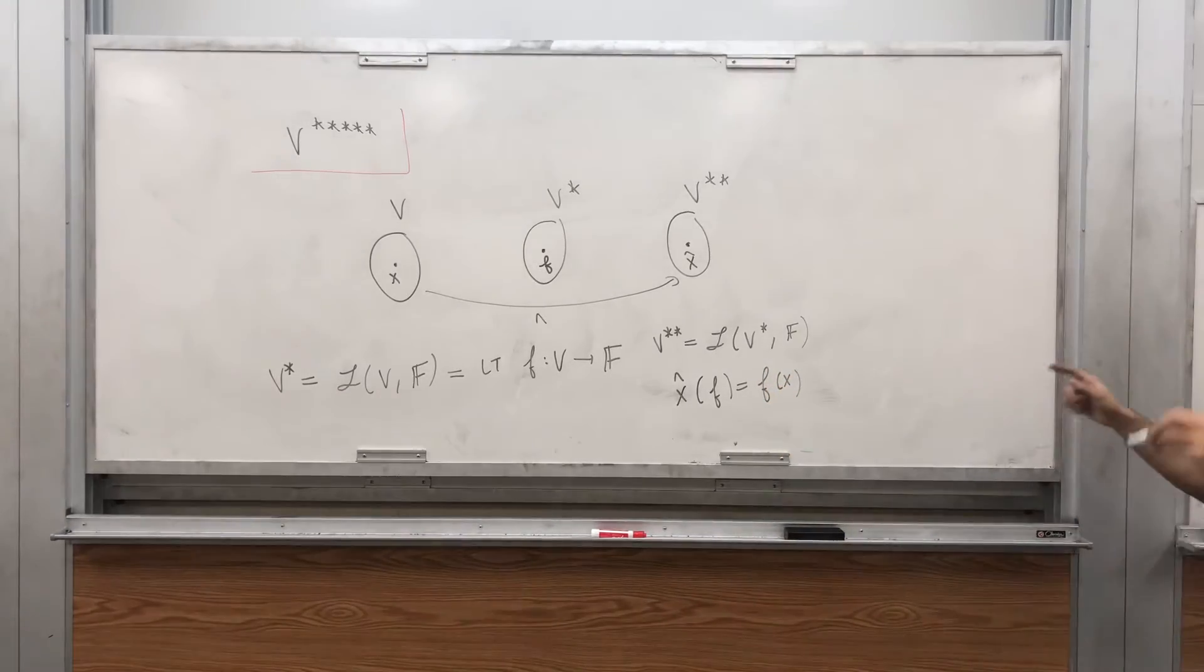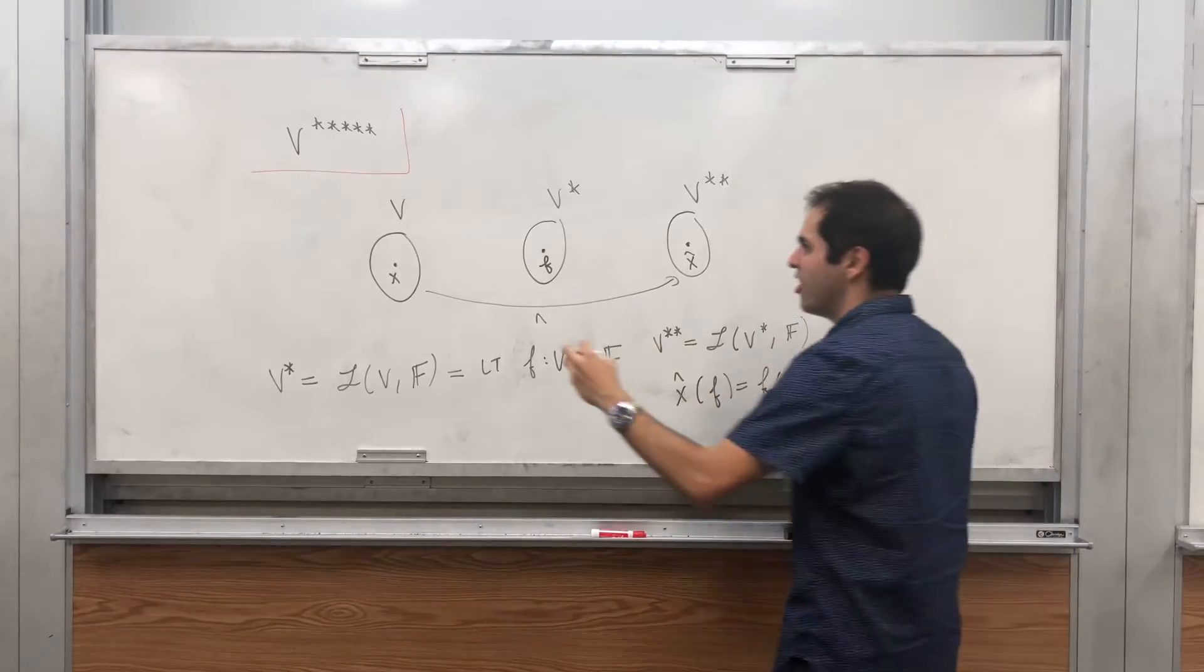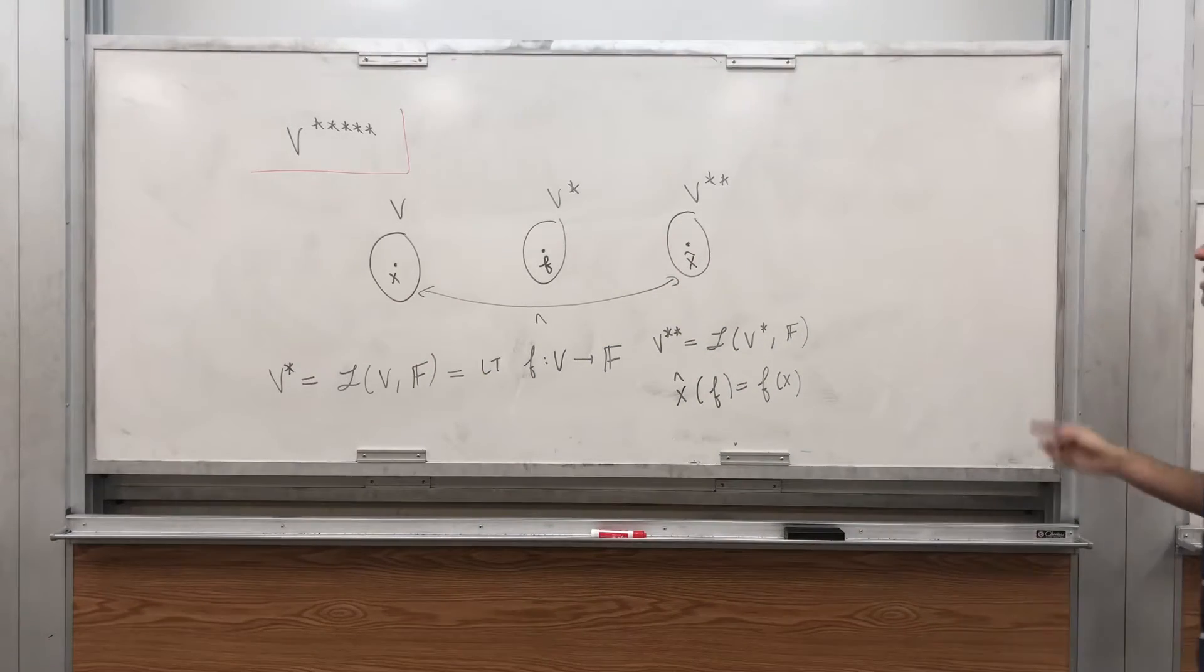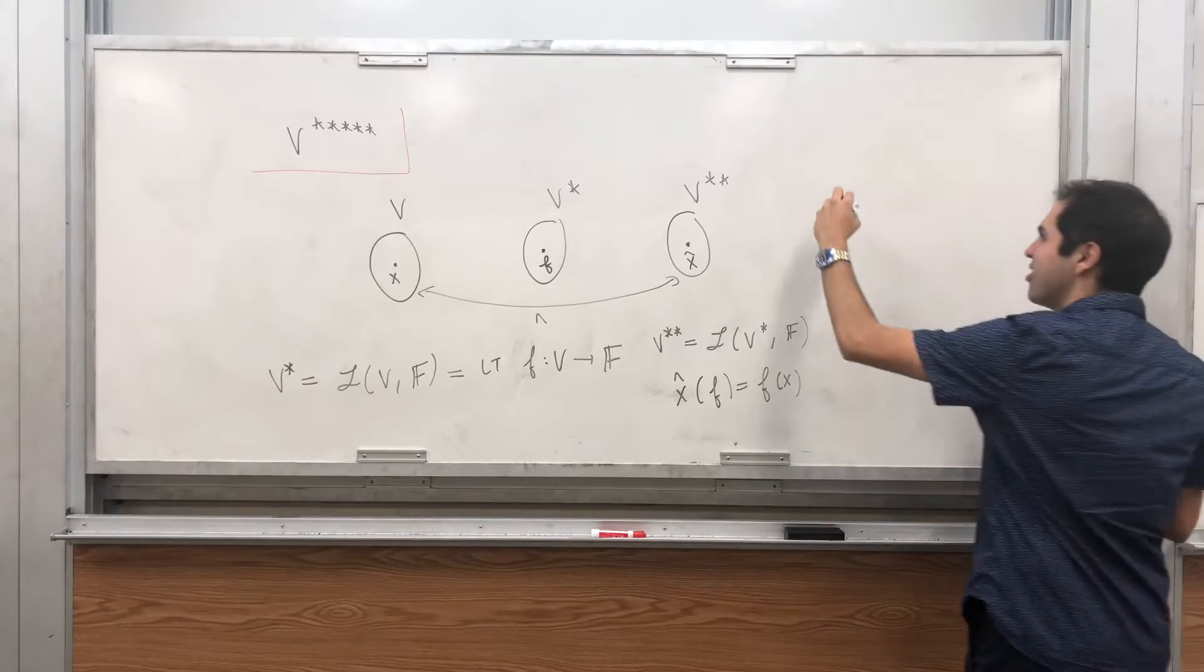Which means it's very easy to go from V to V double star. Now, what would V triple star look like?